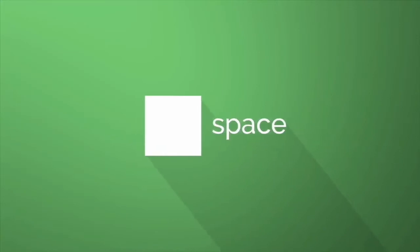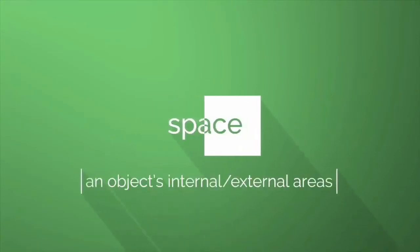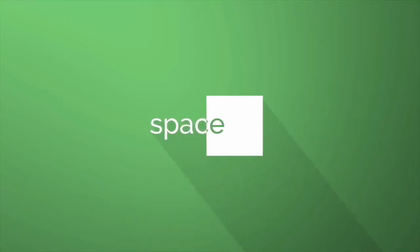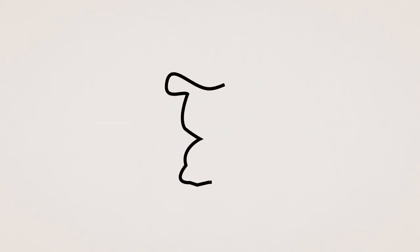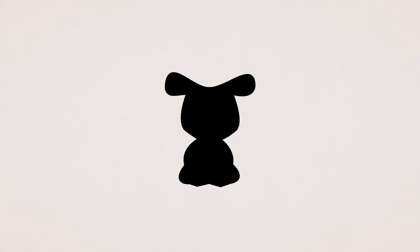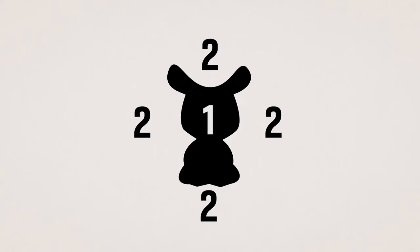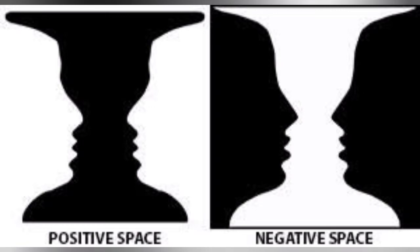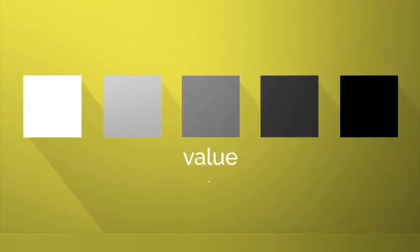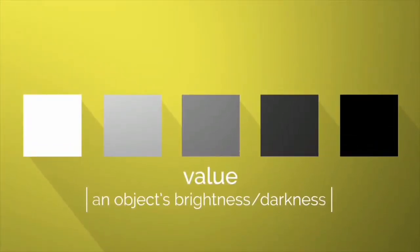Another element of design is space, which is an external or internal area of an object. There is positive and negative space: the positive space is the main object itself — the image of what you've drawn — while the negative space is the background or the area that surrounds the object of interest.